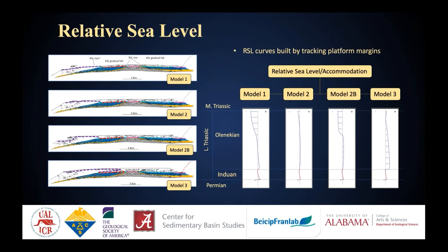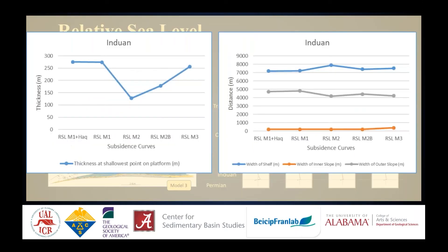I've built four different relative sea level models based on observations in the field, as it is important to capture uncertainty with respect to relative sea level or accommodation. Four subsidence curves have been generated from these different relative sea level curves. The models show that one of these curves generates significantly less thickness on top of the platform than the others, while they don't have a strong impact on the shelf or slope geometry.